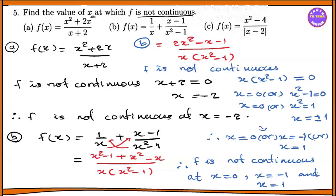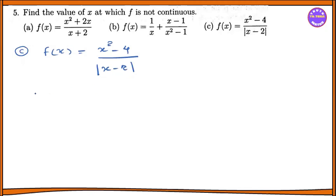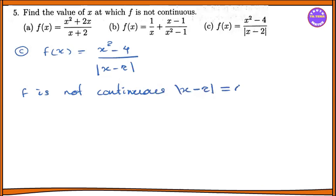Now in this case we have to look at part c. For x equal to x squared minus 4 divided by the modulus of x minus 2. Let's take a look at this question. F is not continuous. The modulus of x is plus or minus, so the modulus of x minus 2 gives plus or minus x minus 2.